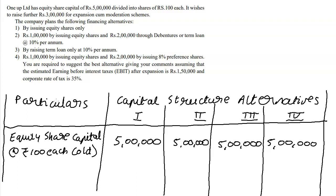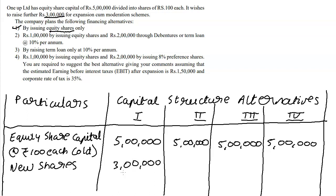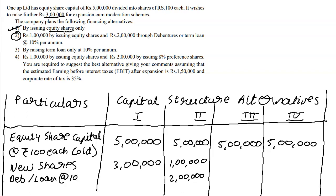We need to issue ₹3 lakhs. In alternative one, it's equity shares only — all three lakhs are new shares. In alternative two, ₹1 lakh goes into equity shares and ₹2 lakhs go into debentures or term loan at 10% per annum.